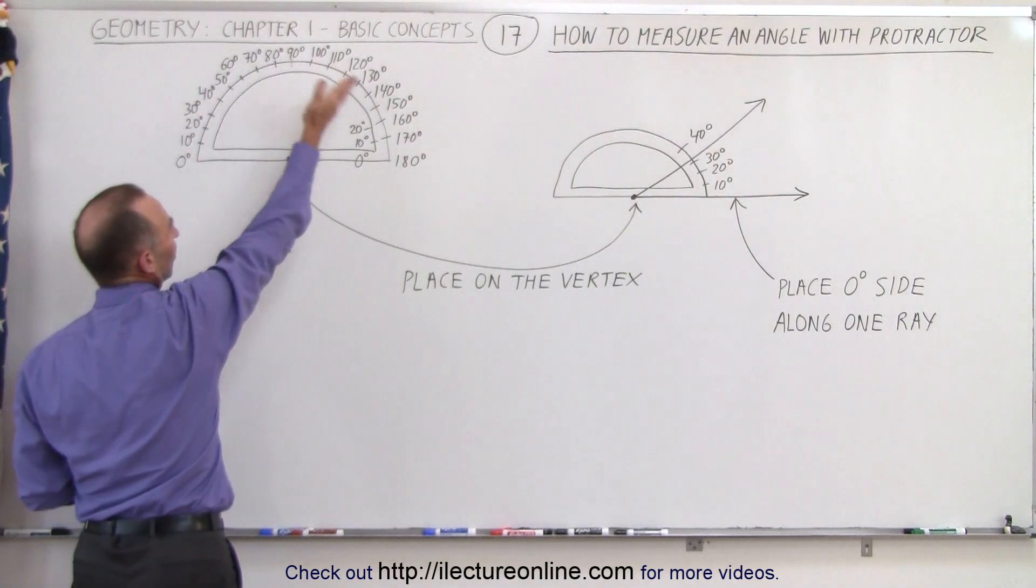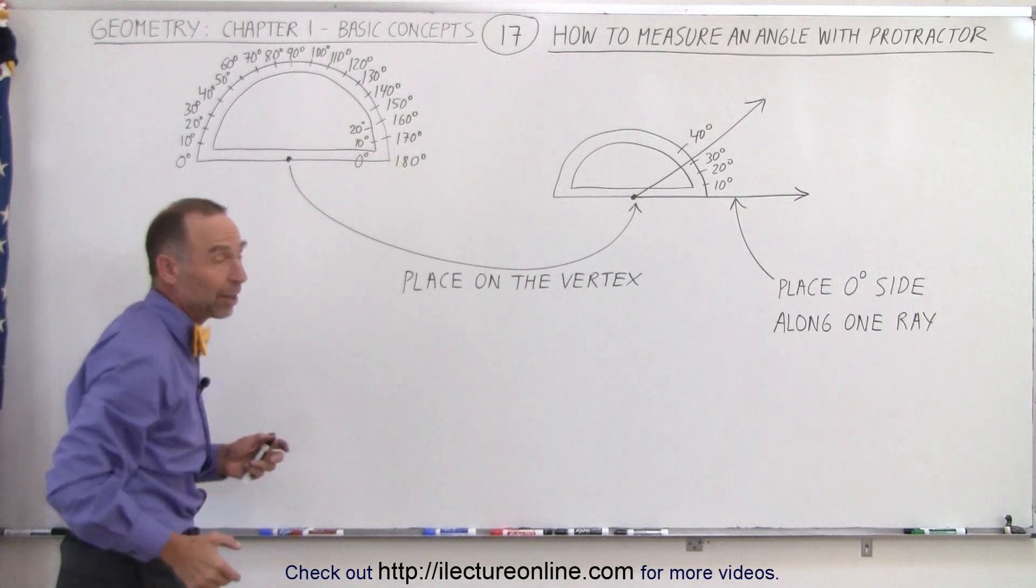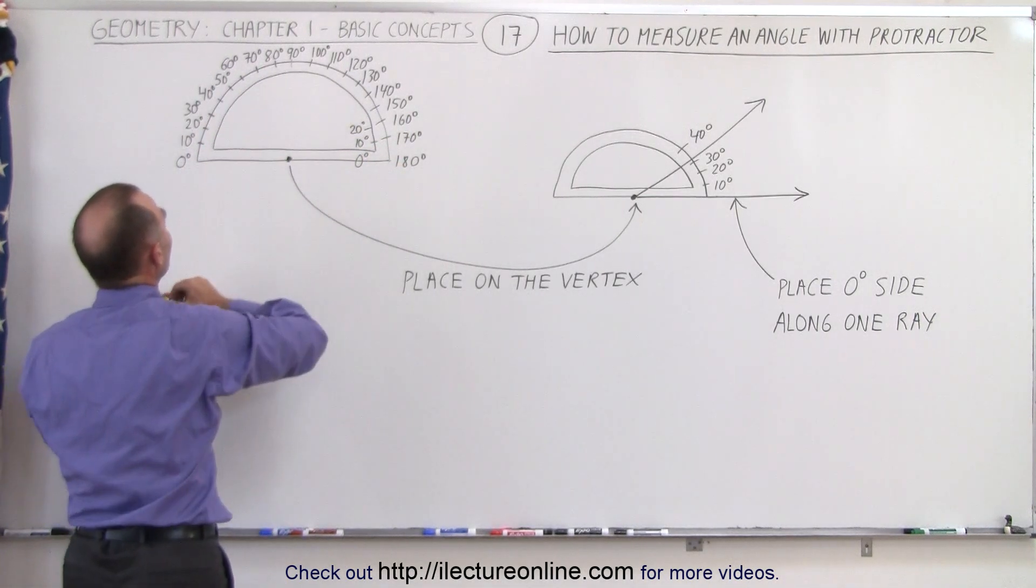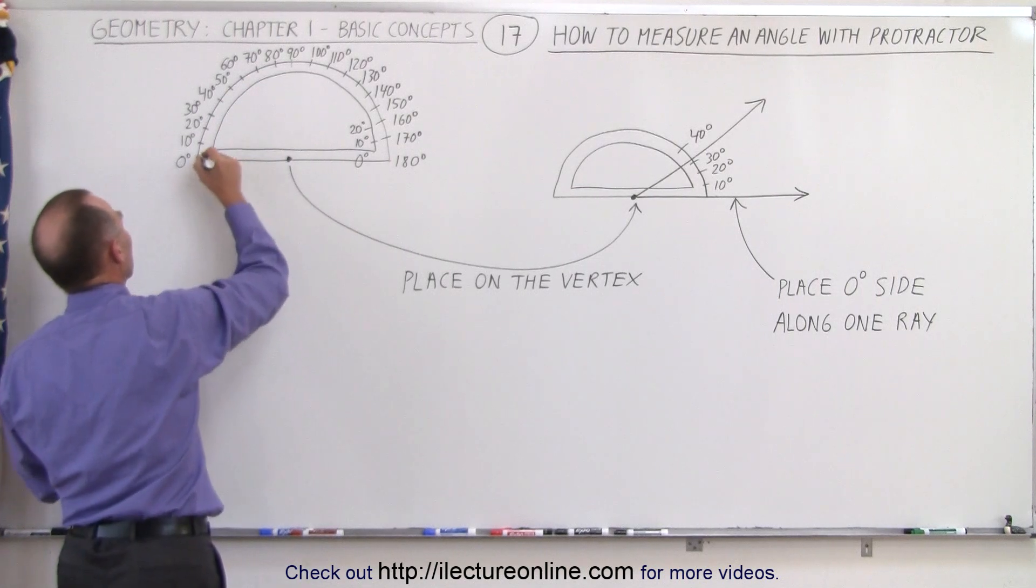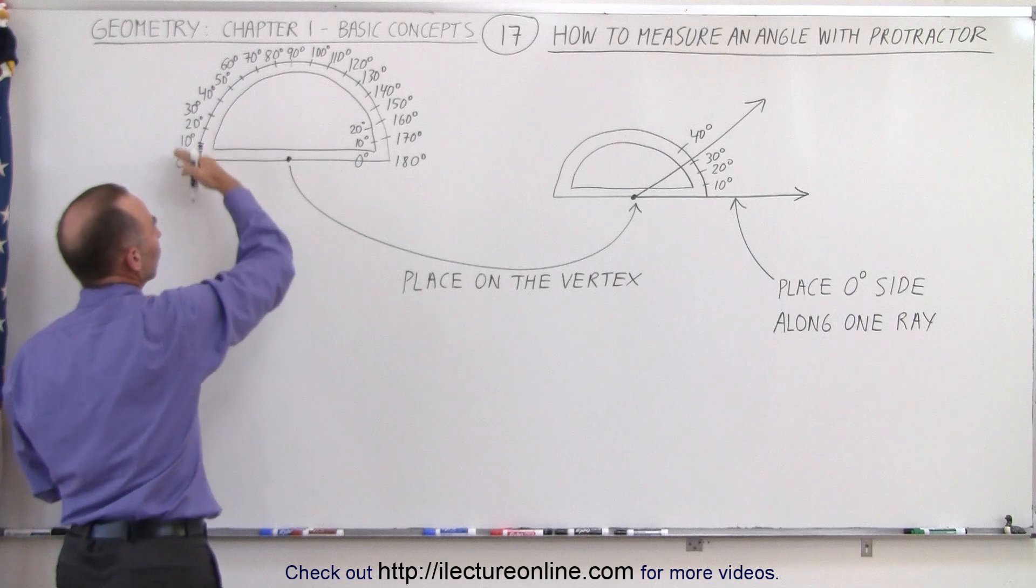And notice, since this represents a semicircle, the angle from this one side to the other side has to add up to 180 degrees, so they're marked typically in 10 degree intervals, and then you'll have small markings in between to indicate individual degree markings, and it goes all the way around.